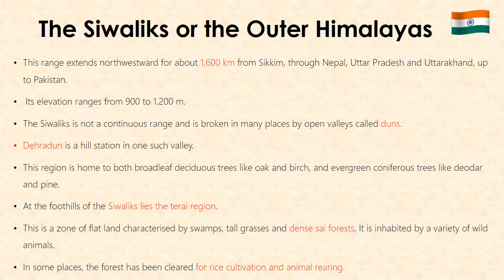At the foothills of the Shivalik lies the Tarai region. This is the zone of flatland characterized by swamps, tall grasses and dense sal forests. It is inhabited by a variety of wild animals. In some places, the forest has been cleared for rice cultivation and animal rearing.